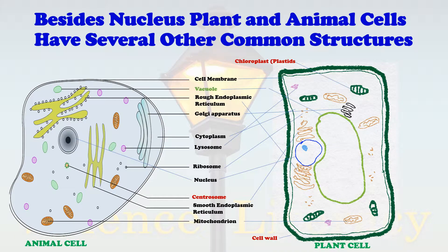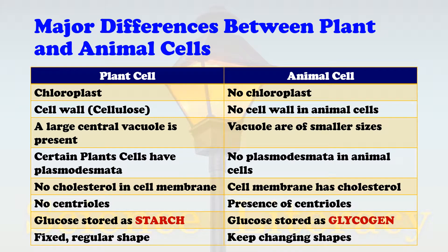These are the important common and unique structures found in animal and plant cells. To highlight the major differences, here is a summary comparing plant cells with animal cells. Plant cells have chloroplasts; animal cells do not. Plant cells have a cell wall made of cellulose; animal cells have no cell wall. Plant cells have a large central vacuole; vacuoles in animal cells are smaller.